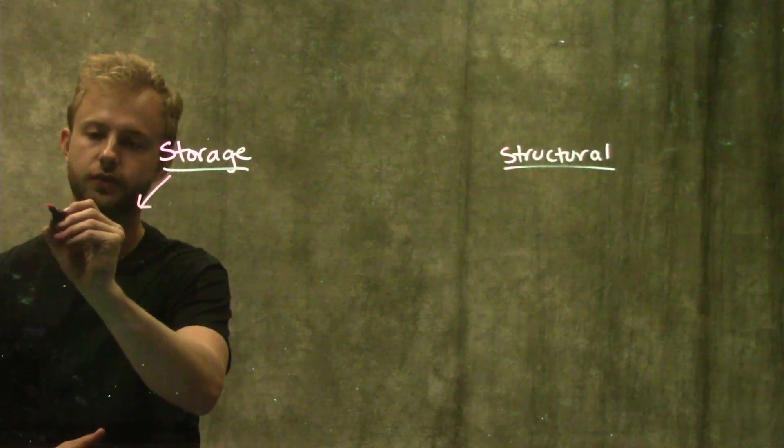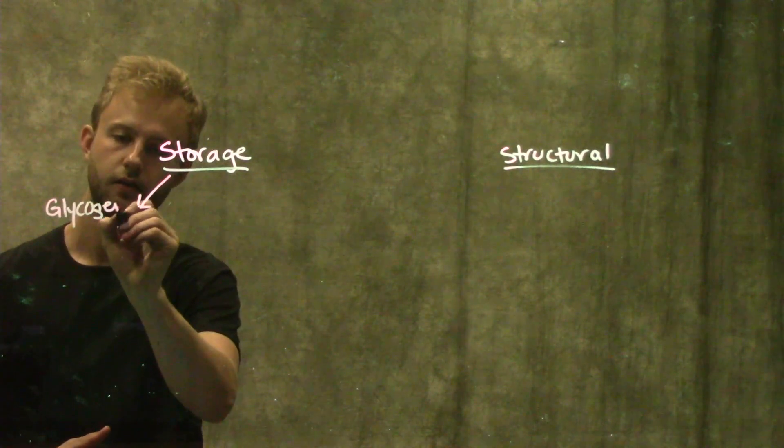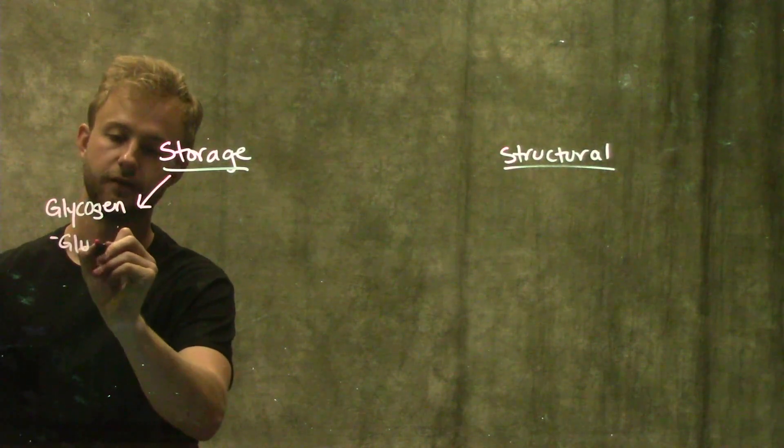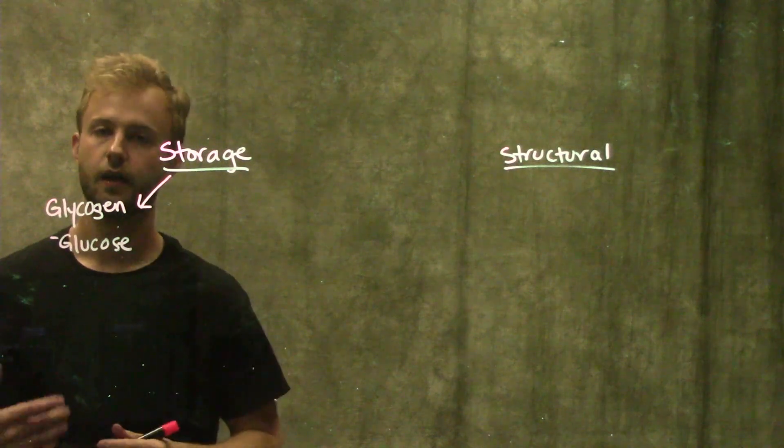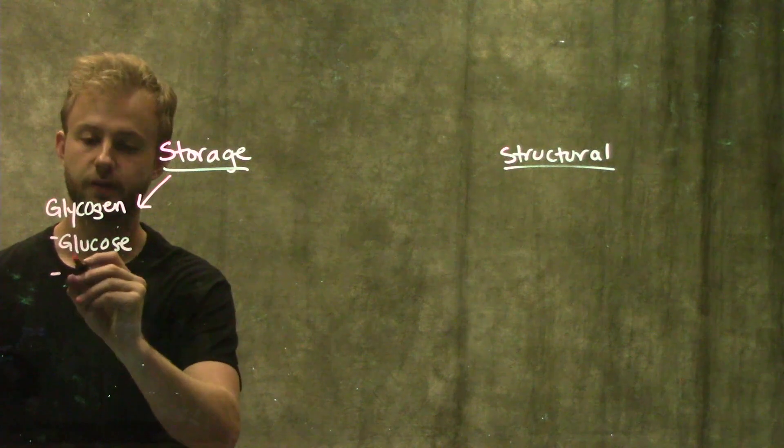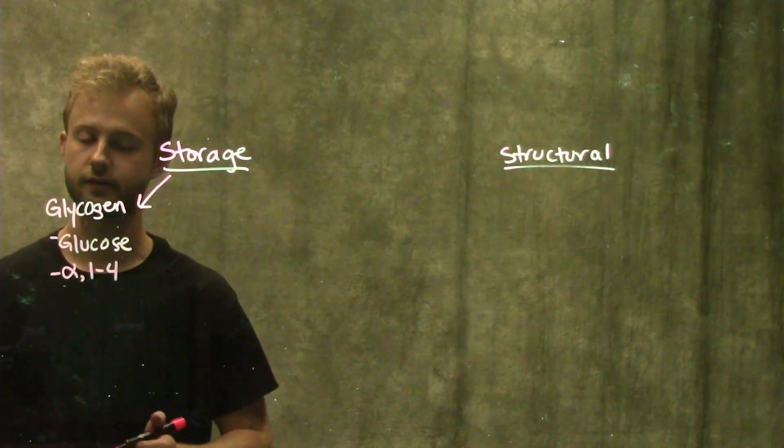In animals, the most common storage polysaccharide is glycogen. Glycogen is made of glucose. These glucose molecules are joined by glycosidic bonds, specifically alpha 1,4 glycosidic bonds.